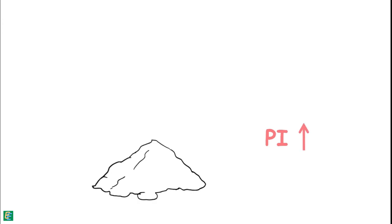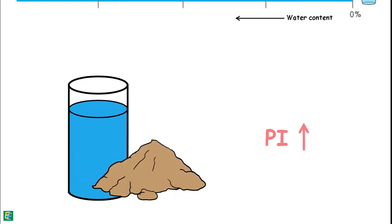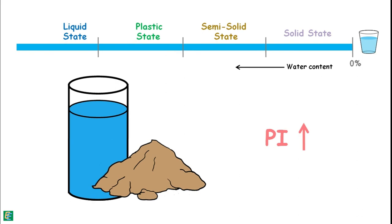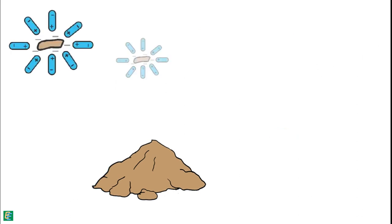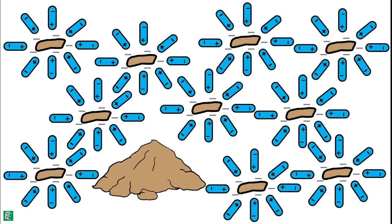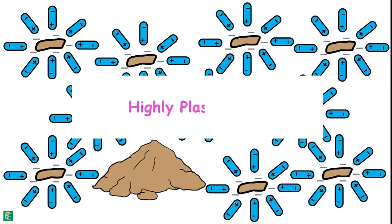While high PI value indicates soil can hold large amount of water in it and still manages to stay at plastic state. It can hold more water into it because it contains large amount of clays, hence highly plastic soil.